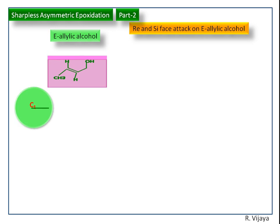Here we assign the Ray and Cyphase. For the first carbon atom, the priorities rotate in the clockwise direction, so we get Ray face. When the oxidant molecule is attacked from the bottom side, we get Ray face attack.